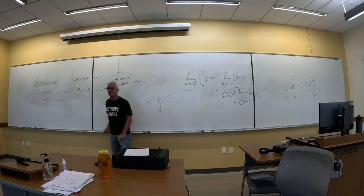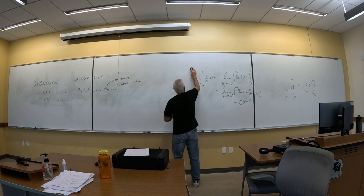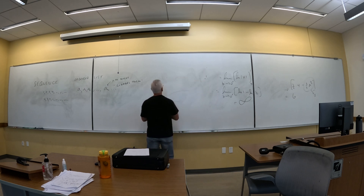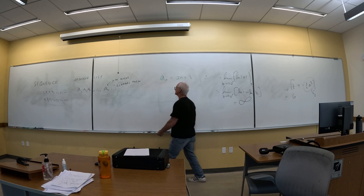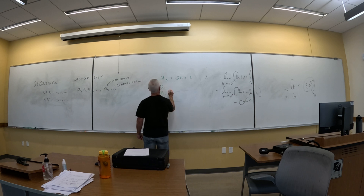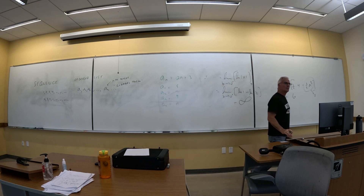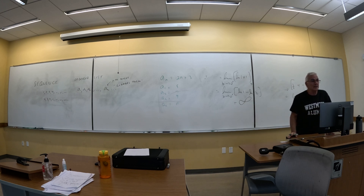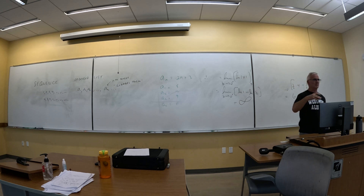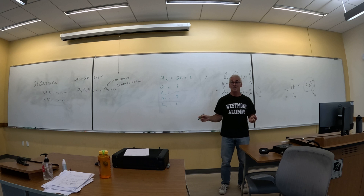If I tell you the nth term of a sequence, I don't need to tell you any of the other terms, because you automatically know all of them. I'm thinking of a sequence whose nth term is 2n plus 3. A1 is 5, A2 is 7, A3 is 9, A4 is 11. That's pretty easy! What if I started with 5, 7, 9, 11 and asked you for the general term? This is what's called an arithmetic sequence. If I ask you for the 100th term — it's 203. I didn't have to find the first 99.